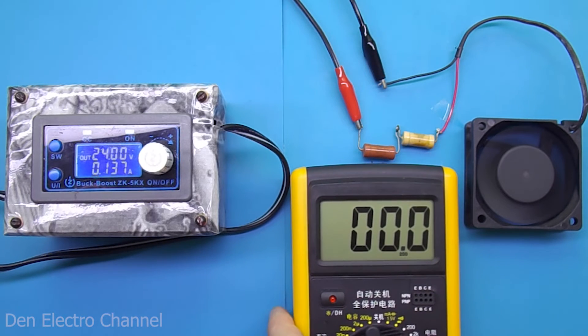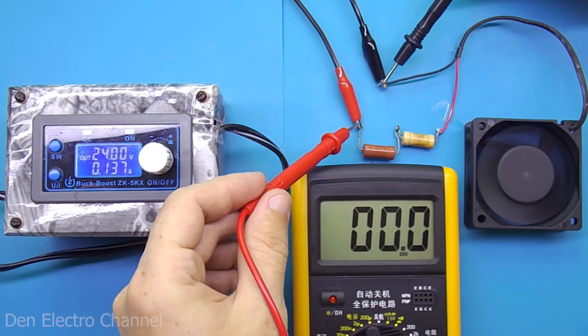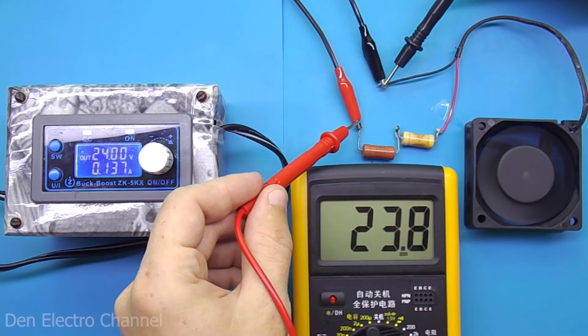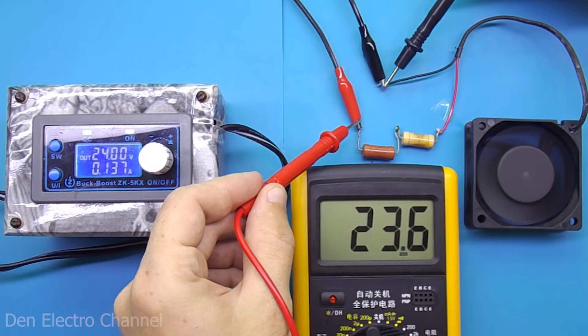I'll take a multimeter and measure the voltage at all nodes of the circuit. 24 volts come from the power supply.